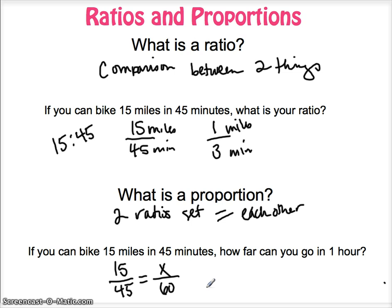Right there is a proportion that we can solve. One way, what you want to think about when you set this up is that was 15 miles in 45 minutes, so how far would be x miles in 60 minutes? Okay, so if you have minutes on the bottom, you want minutes on the bottom on the other side of the proportion.